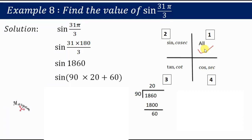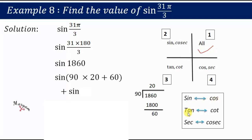In the 21st quadrant all trigonometric functions are positive, so we get a positive sign. Now, since the quotient 20 is an even number, the trigonometric function remains unchanged — sine stays as sine. If it were odd, sine would convert to cos, tan to cot, sec to cosec. Since 20 is even, we get +sin 60°, and sin 60° = √3/2.